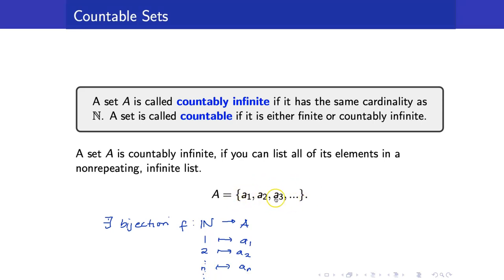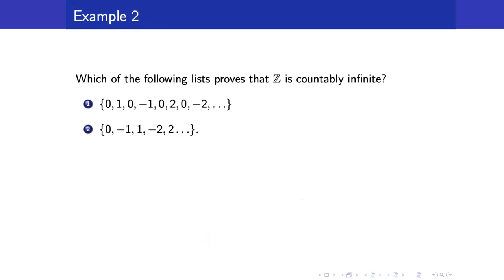The set A can be formed into a list, and that list is going to be infinite. This listing means that you are not skipping any elements. Which of the following lists prove that the set of integers is countably infinite? If the listing is repeating, the answer is no — it has to be non-repeating to ensure the function is a bijection.